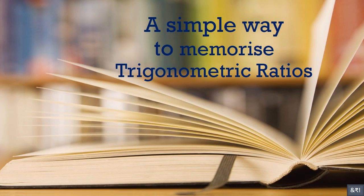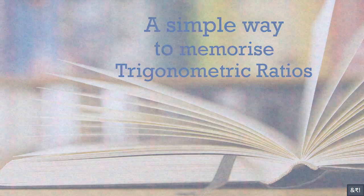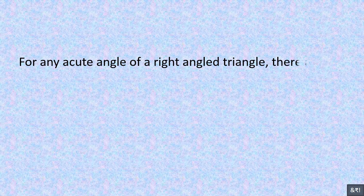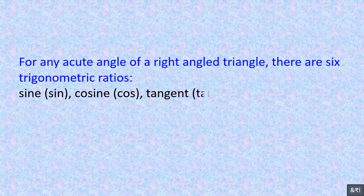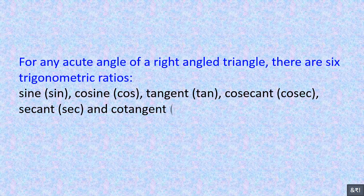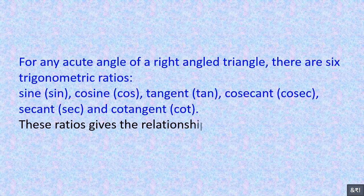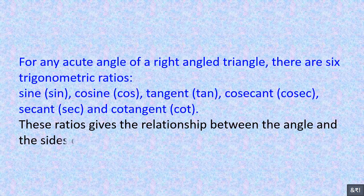A simple way to memorize trigonometric ratios. For any acute angle of a right-angled triangle, there are six trigonometric ratios: sine (sin), cosine (cos), tangent (tan), cosecant (cosec), secant (sec), and cotangent (cot). These ratios give the relationship between the angle and the sides of the triangle.